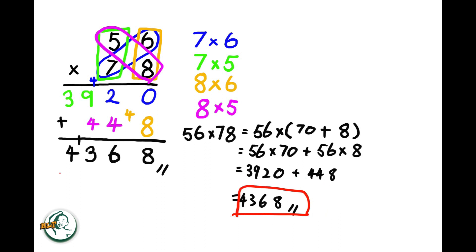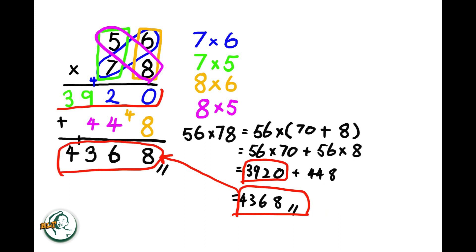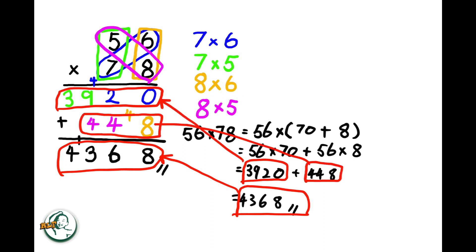So this 4368 equals to this part. This 3,920 equals to here, and 448 is here. And this explains why we need to add these two numbers here in the column method.